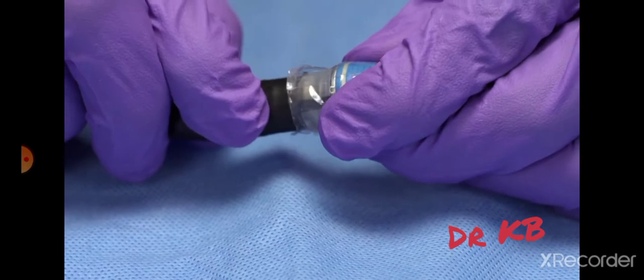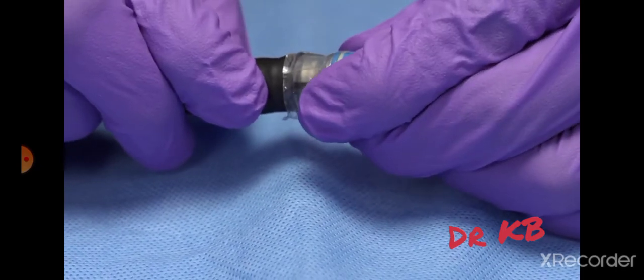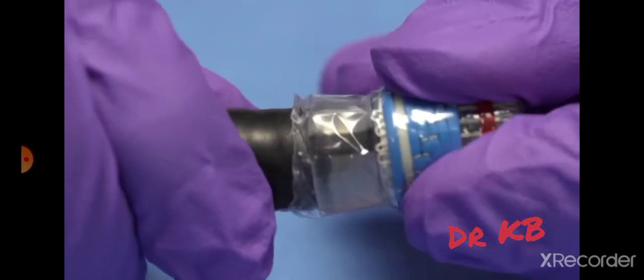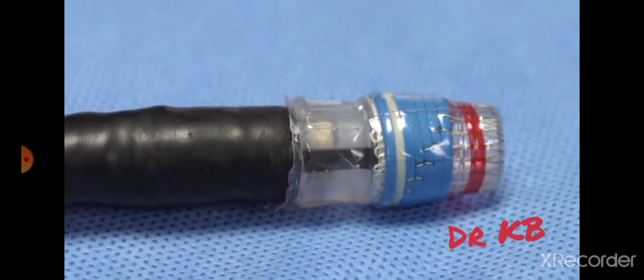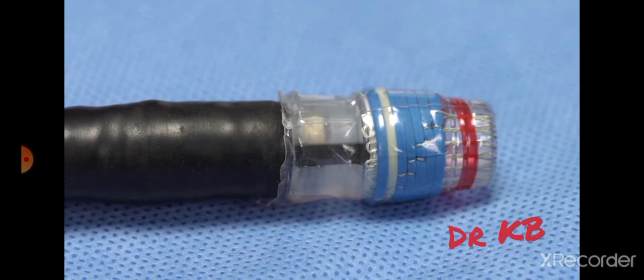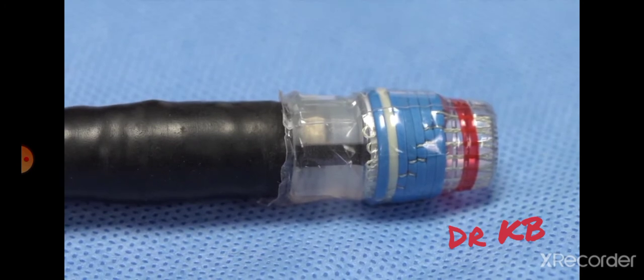Secure the ligating unit to the endoscope by twisting or rocking the soft proximal adapter of the ligating unit while pushing it onto the distal tip of the endoscope. The ligating unit should be pushed until the tip of the endoscope is up against the rigid part of the ligating unit cylinder.